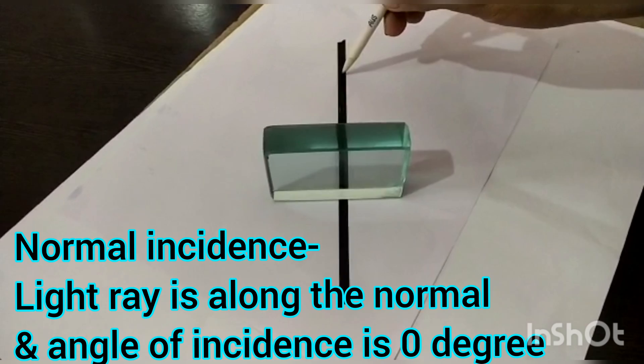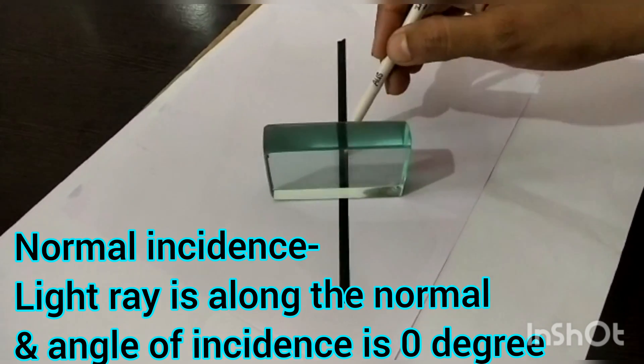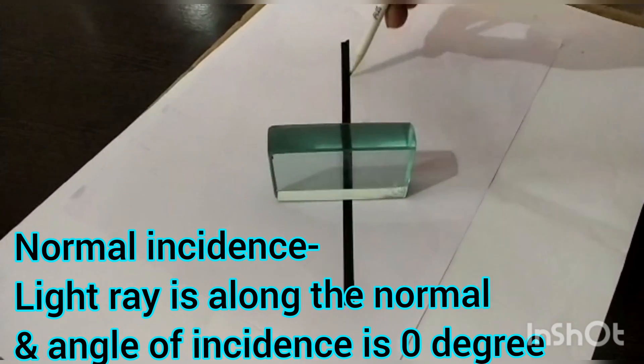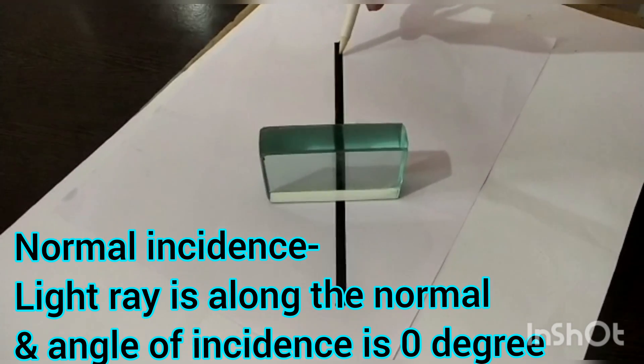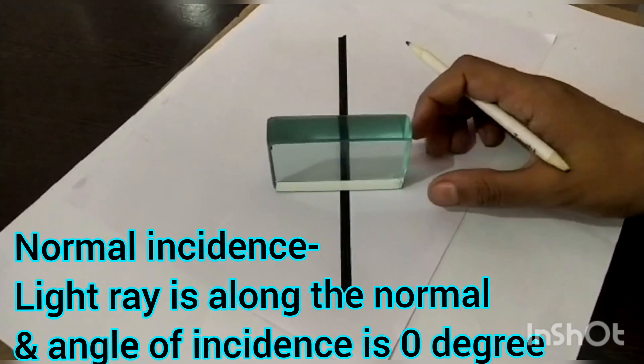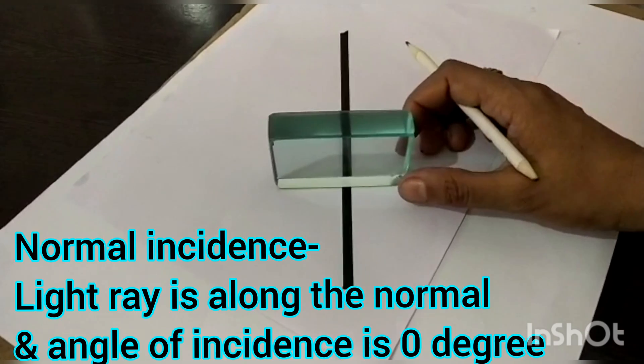The angle with the incident ray, but the angle of incidence will be 0 degrees because the incident ray and normal are on the same side. That's why there is no deviation, no change in the path. Lateral displacement is also 0, there is no change in the direction of the light ray.